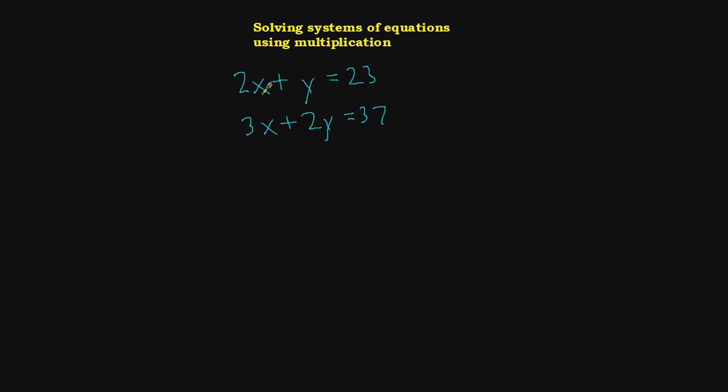And I'd like to either eliminate the x's or the y's. The problem is when I'm looking at this problem, it's 2x and 3x. If I add those together, I get 5x. If I subtract, I get x.